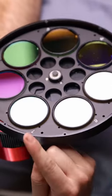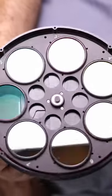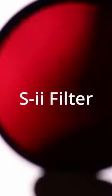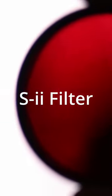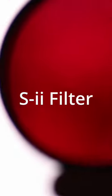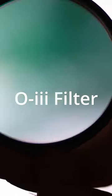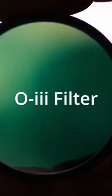Each of these filters lets through only a specific color of light from gases in space. Here's the sulfur filter, and next is the oxygen 3 filter. These filters let us see things in space that would otherwise be completely invisible.